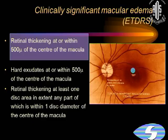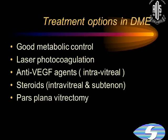This is the classical ETDRS definition of clinically significant macular edema, with thickening within one disc diameter of the center of the macula. We all know that the options in DME are good metabolic control, laser, anti-VEGF agents, intravitreal steroids, and in some situations pars plana vitrectomy where there is a tractional component.